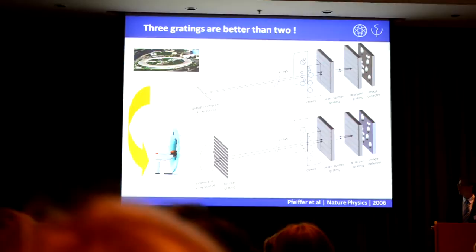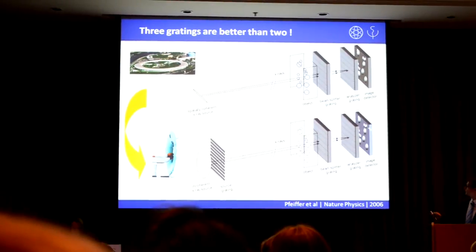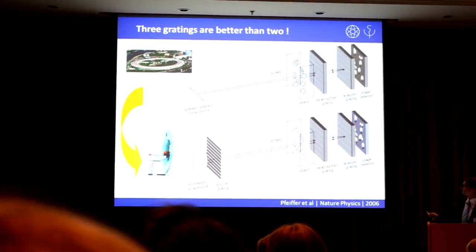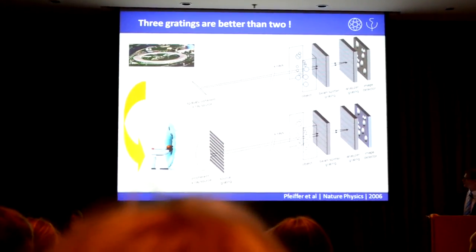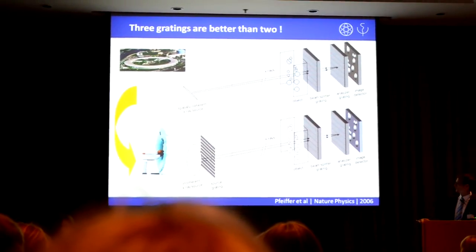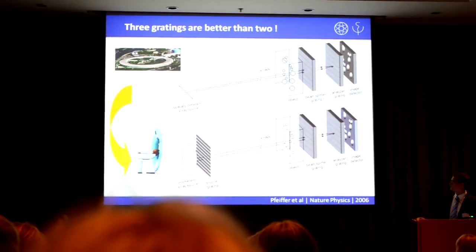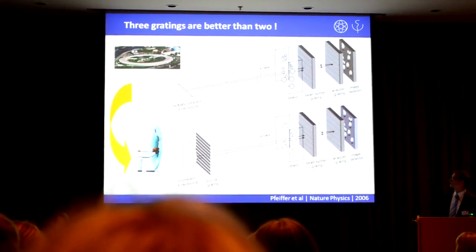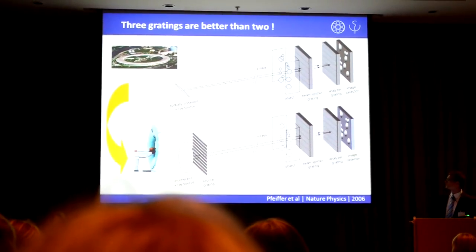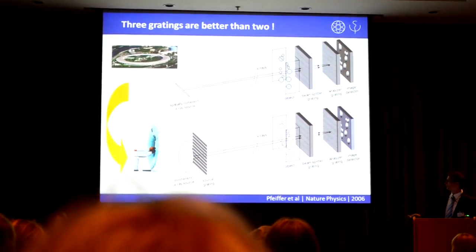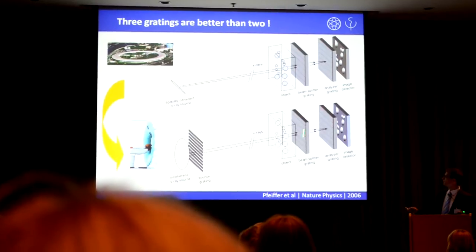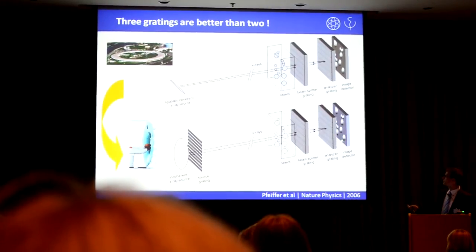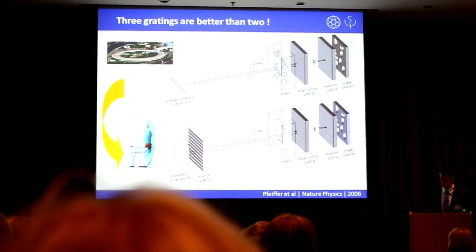Each one of those line sources corresponds to a spatially coherent X-ray source from the brilliant beam, and in this way the whole setup also works again. The basic thing we have to do is to place yet another grating — a third grating — in front of the X-ray source. We have our object in the beam, our phase grating, our reference grating, and the imaging detector.